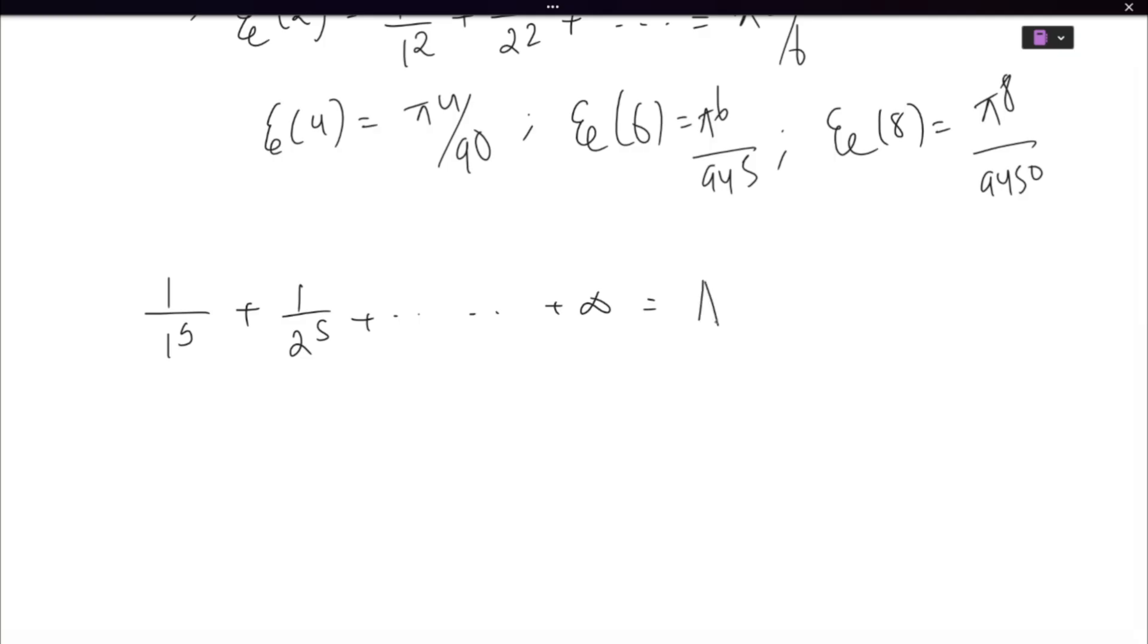And we are trying to find out the even version and odd version. What will that be in terms of A? So first step is you multiply by 1 by 2 to the power s on both sides.